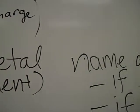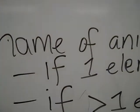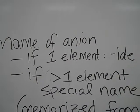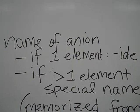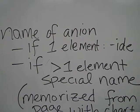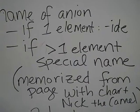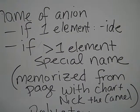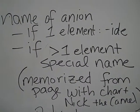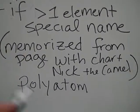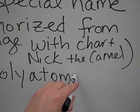And then for the anion, we're going to look. If it's just one element in the anion, we're going to put IDE. If it's more than one element, it'll have to have a special name, something that you've memorized. My students have a chart with Nick the Camel ate supper in Phoenix to help them. They will have all their polyatomic ions named and memorized from that page.